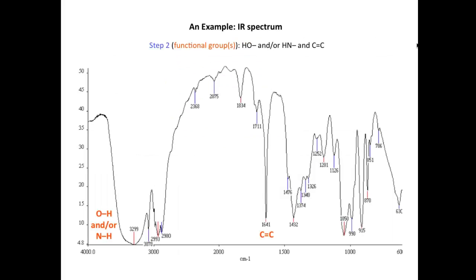In step two, we're going to look at the infrared spectrum of the unknown molecule, focusing on the most intense absorption bands. We see a very intense and very broad band at around 3,300, which is consistent with either an alcohol or an amine — an OH or NH bond. There are CH stretching frequencies, and also very distinctively, a peak around 1,640 consistent with a C=C double bond in an alkene.